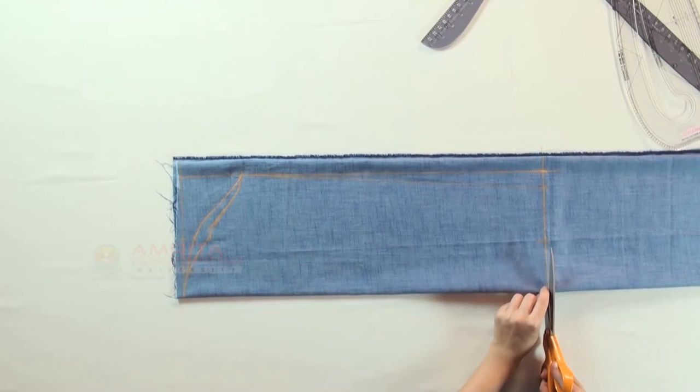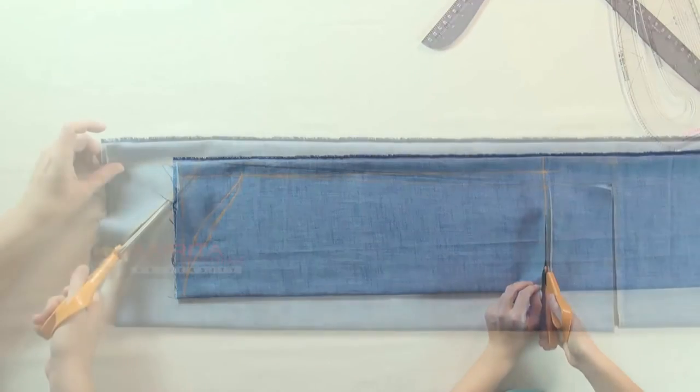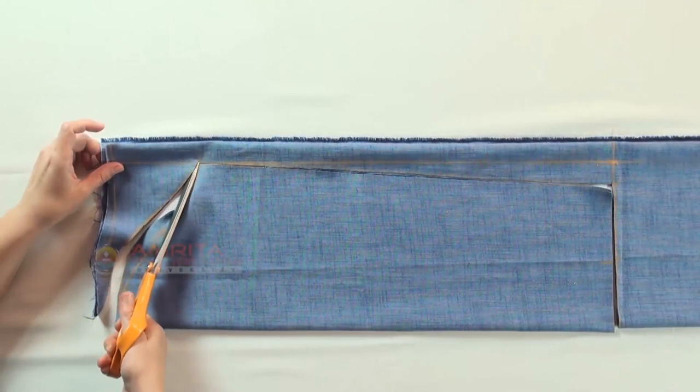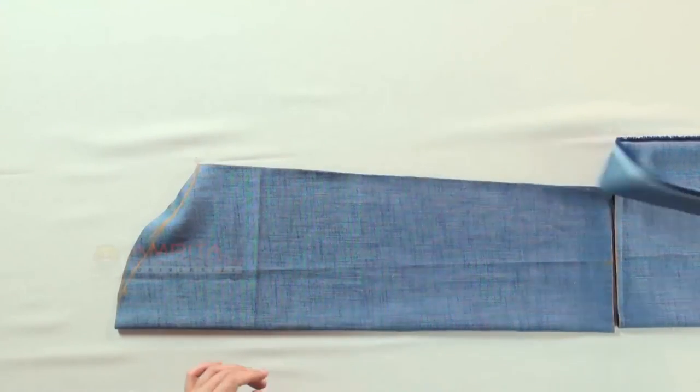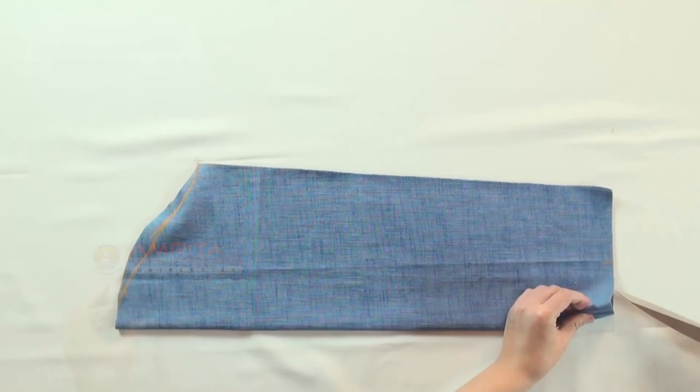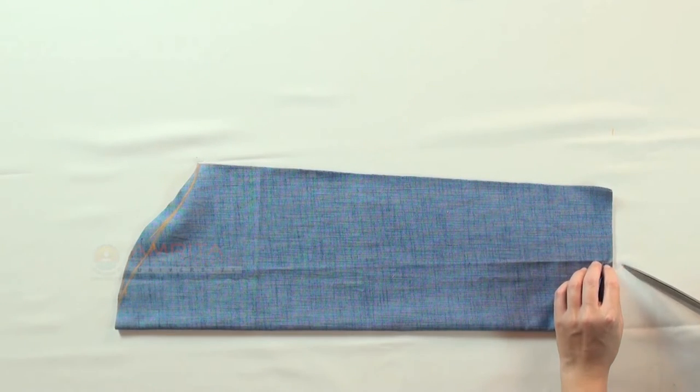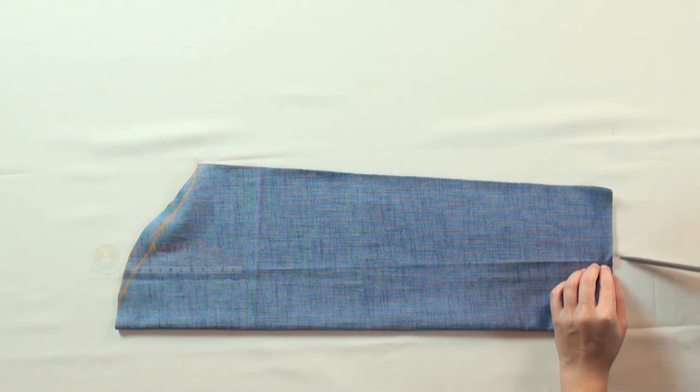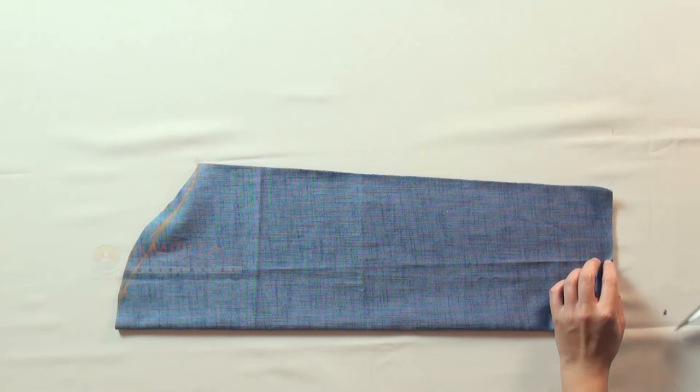Now cut along the drafted lines as shown here. Make a small notch at point eleven only at the back side of the sleeve. This will be the mark for the back sleeve placket.